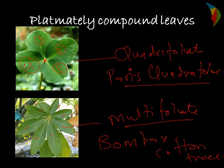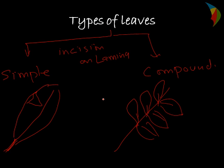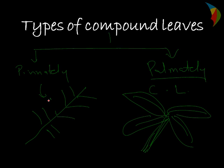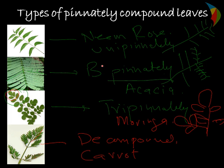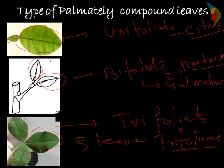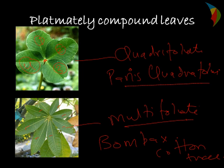So just to give a recap: we have divided leaves into two types — simple leaves and compound leaves. We have further divided compound leaves into pinnately compound and palmately compound. Then pinnately compound into unipinnately, bipinnately, tripinnately, and decompound leaves. Palmately compound leaves are divided as unifoliate, bifoliate, trifoliate, quadrifoliate, and multifoliate. These are the broad divisions of the types of leaves.